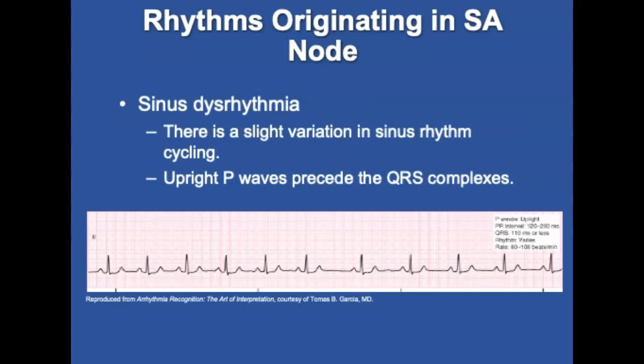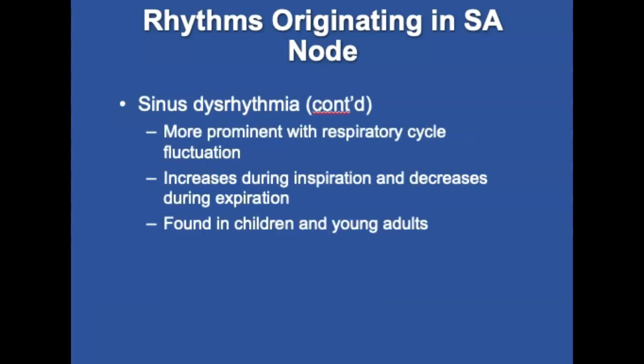Sinus dysrhythmia is a slight variation in the cycling of the sinus rhythm, usually exceeding 0.12 seconds between the longest and shortest cycles, associated with respiratory cycle fluctuations. The rate increases during inspiration and decreases during expiration. The SA node is still the pacemaker, and an upright P wave precedes every QRS complex. Sinus dysrhythmia is often found in children and young adults and tends to diminish with age.